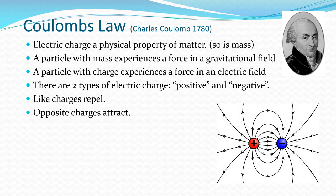Here we see the field diagram which exists between a positive and negative charge. We see that in the positive charge, the field lines are radiating out from the positive charge and radiating into the negative charge. That's because the field lines represent the direction a positive charge would travel when experiencing the field. So a positive charge will be repelled from the positive charge and attracted to the negative charge.